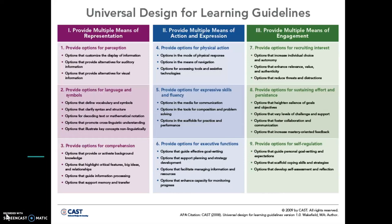Universal Design for Learning has a guideline. The main three aspects of it are providing multiple means of representation, providing multiple means of action and expression, and providing multiple means of engagement.